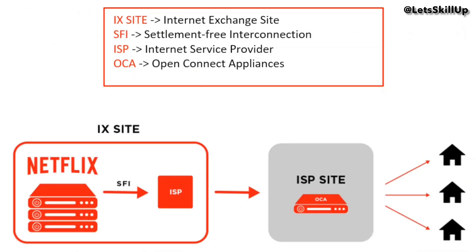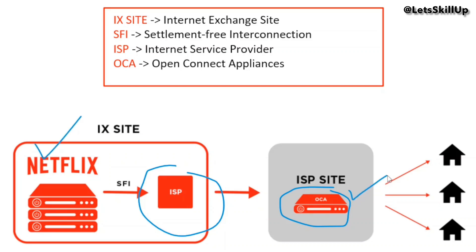Netflix partners with internet service providers by installing Open Connect Appliances at their data centers. OCA devices are high-speed, high-storage devices which can store encoded video and image files, and they serve these files via HTTP or HTTPS to client devices — for example, set-top boxes, mobile devices, or smart TVs. Netflix provides the hardware which is OCA, and ISPs provide the power, space, and connectivity. ISPs can directly control which of their customers are routed to their embedded OCAs. ISP partners with embedded OCAs also use network peering for resiliency and to enable efficient nightly fill updates from Netflix.